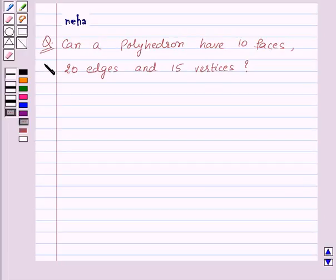Hi and welcome to the session. Today we will discuss the following question: Can a polyhedron have 10 faces, 20 edges and 15 vertices? Before proceeding for the solution, let's recall that for any polyhedron, Euler's formula is true.